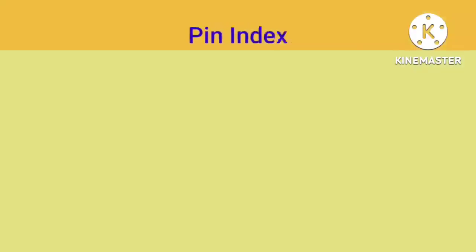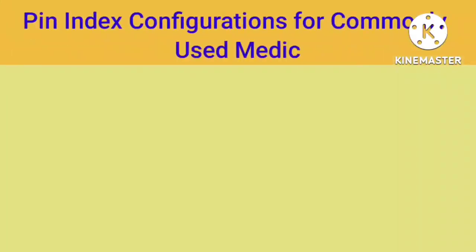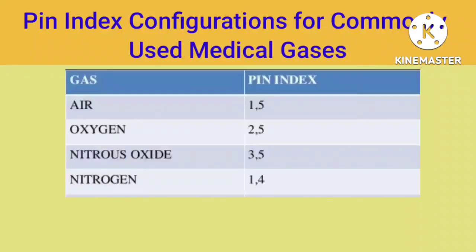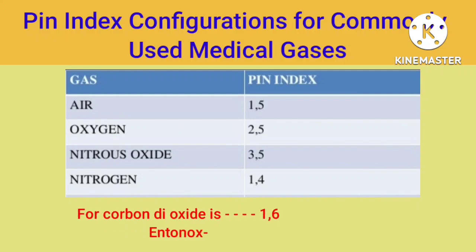Pin Index Configurations for Commonly Used Medical Gases: Pin Index for Air is 1 and 5; for Oxygen, 2 and 5; Pin Index for Nitrous Oxide is 3 and 5; for Nitrogen, 1 and 4; for Carbon Dioxide, 1 and 6; Entonox, 7.